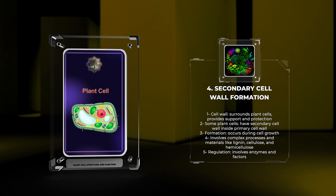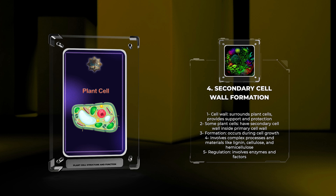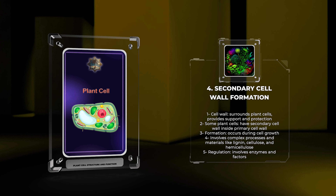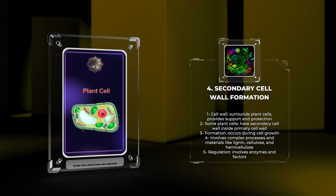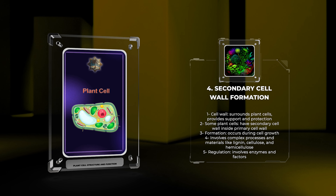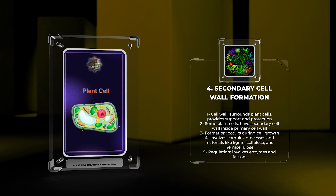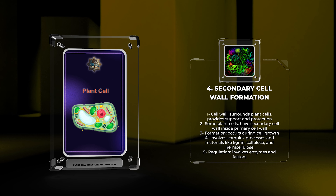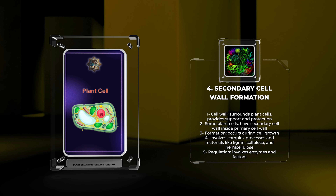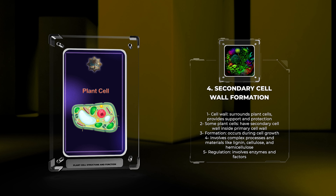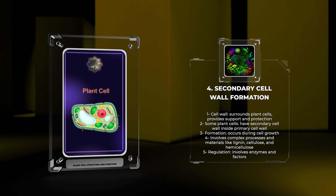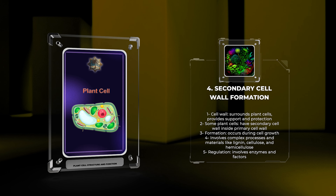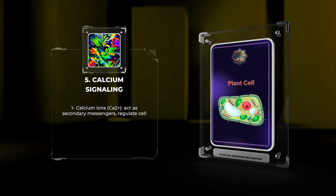The cell wall surrounds plant cells, providing support and protection. Some plant cells have a secondary cell wall inside the primary cell wall, adding strength. Formation occurs during cell growth and involves complex processes and materials like lignin, cellulose, and hemicellulose. Regulation involves enzymes and factors.